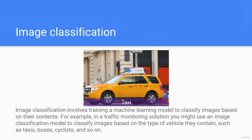First, image classification involves training a machine learning model to classify images based on their contents. For example, in a traffic monitoring solution, you might use an image classification model to classify images based on the type of vehicle they contain — such as taxis, buses, cyclists, and so on. From the image shown, a vehicle has been identified as a taxi because of its yellow or orange color.